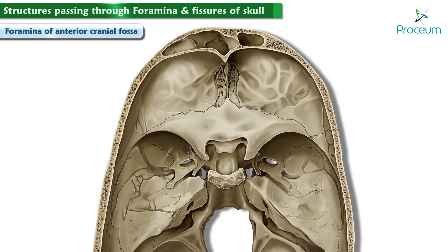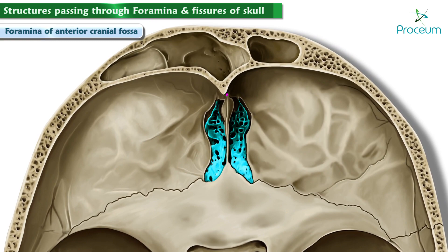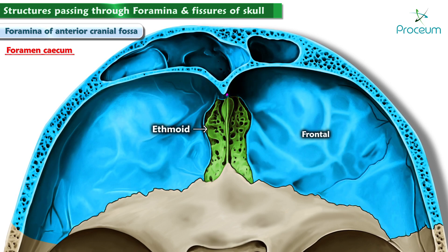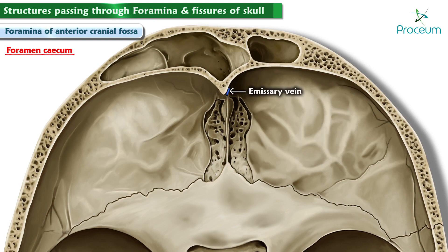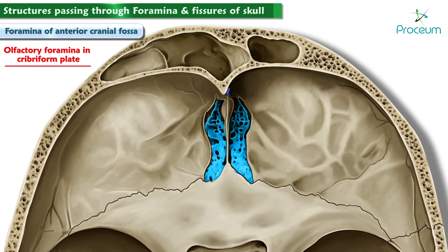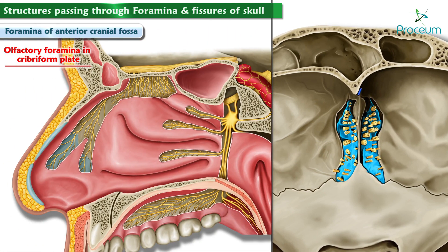There are only two foramina to mention in the anterior cranial fossa, but one is a group of foramina associated with the first cranial nerve. The foramen cecum lies in the frontal bone, just anterior to the ethmoid bone. It allows passage for an emissary vein that comes from the nasal cavity and drains into the superior sagittal sinus, which is part of the venous drainage system associated with the brain. The olfactory foramina in the cribriform plate make up a very important part of the pathway of the first cranial nerve, the olfactory nerve. Nerve endings in the top of our nose responsible for our sense of smell pass through these holes in the cribriform plate of the ethmoid bone.